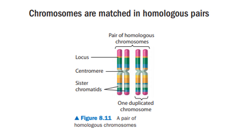When treated with special dyes, the chromosomes of the pair display a matching staining pattern represented by the color strips in the figure. Notice that each chromosome is duplicated, consisting of two sister chromatids joined at the centromere. Every chromosome has a twin that resembles it in length and centromere position. The two chromosomes of such a matching pair are called homologous chromosomes because they both carry the genes controlling the same inherited characteristics.